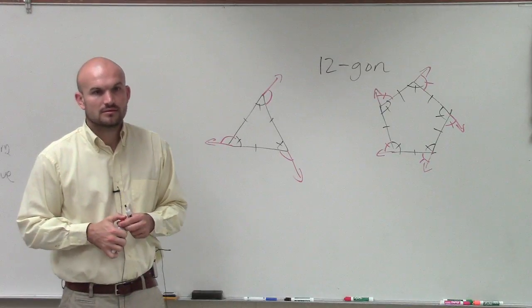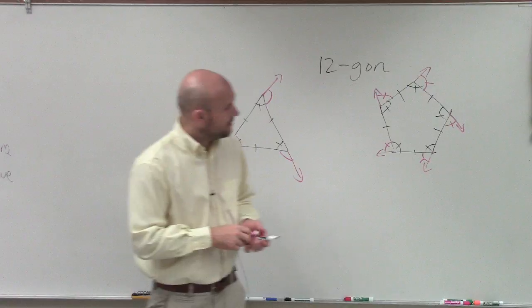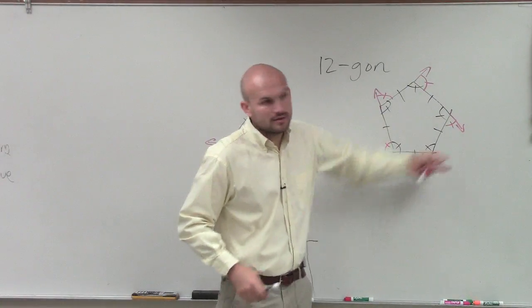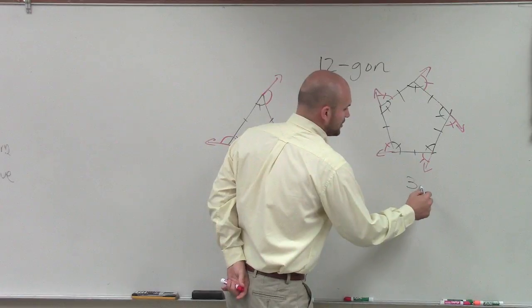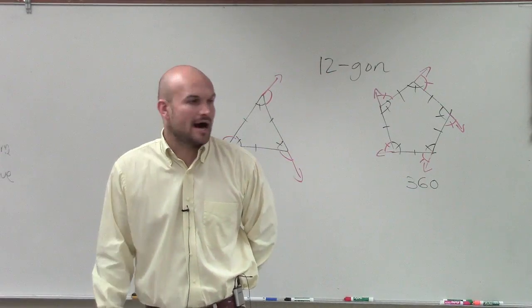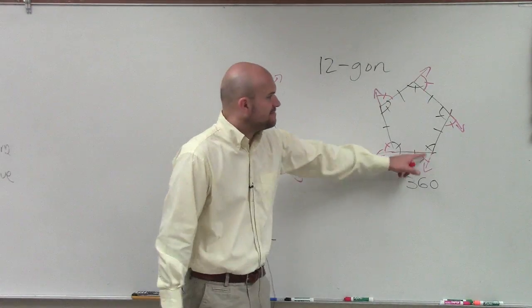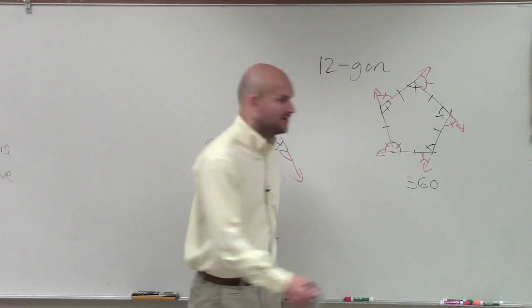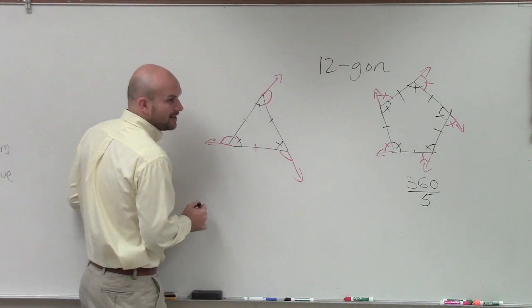So anyways, what I want to do is here, this is a pentagon. So all those pink angles, exterior angles, add up to 360. Well, how many of them do I have? Five. So if I want to find the measure of each of them, I have to split it among how many sides? Five sides. So I do 360 divided by five.